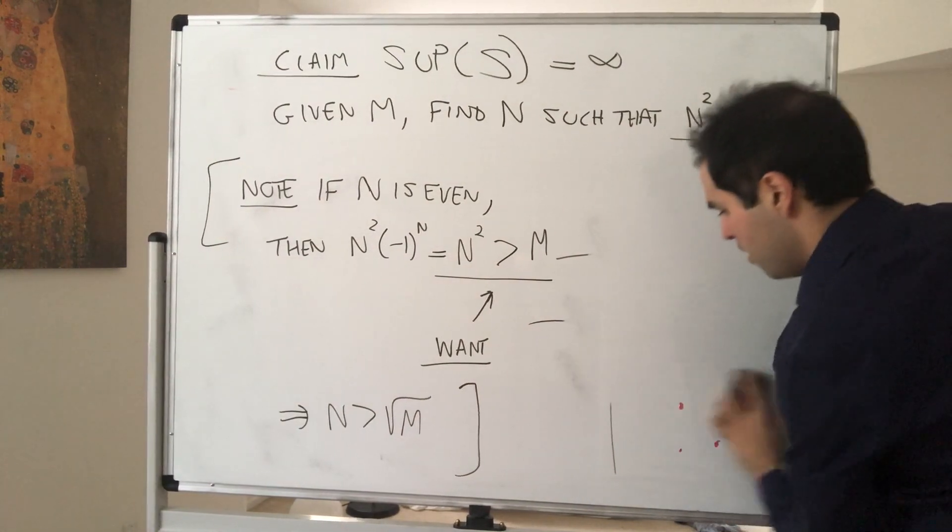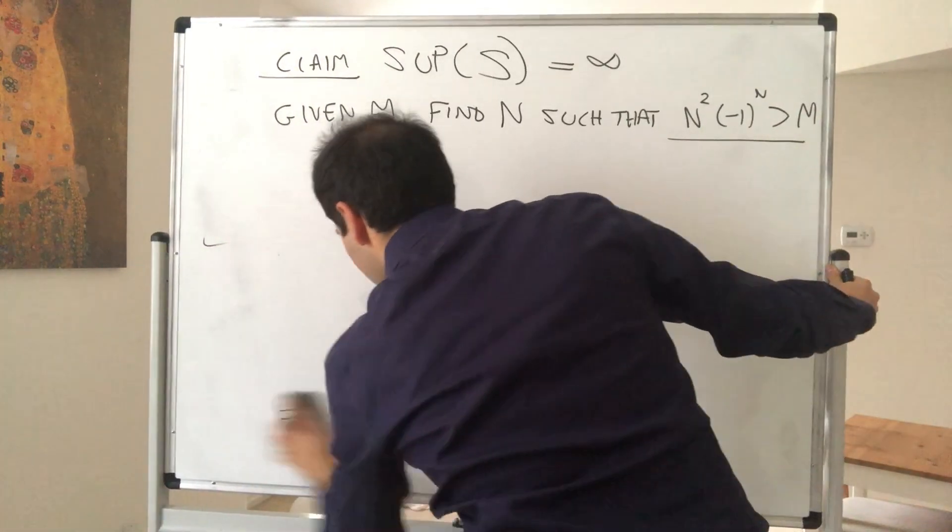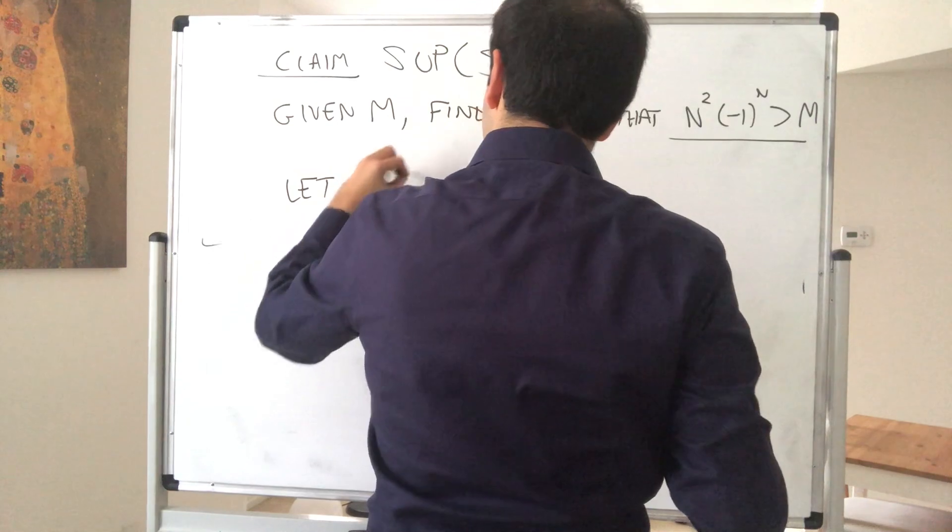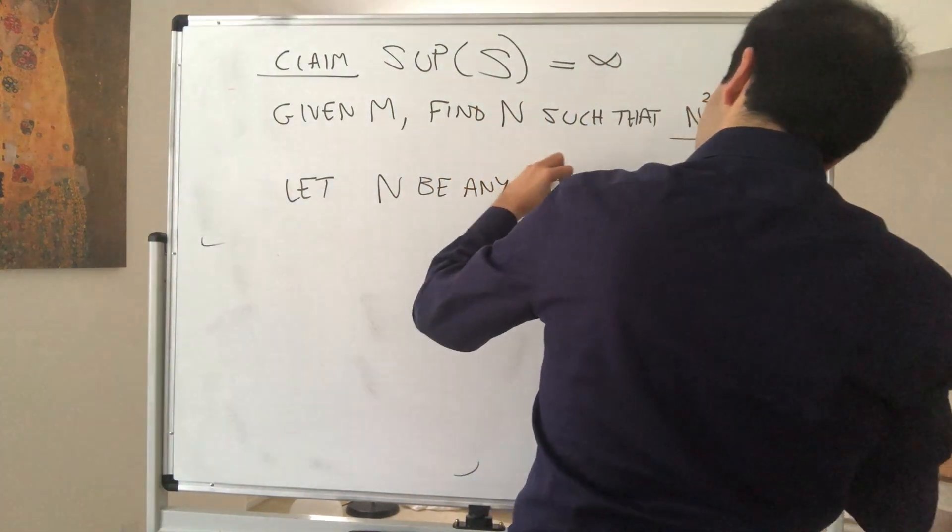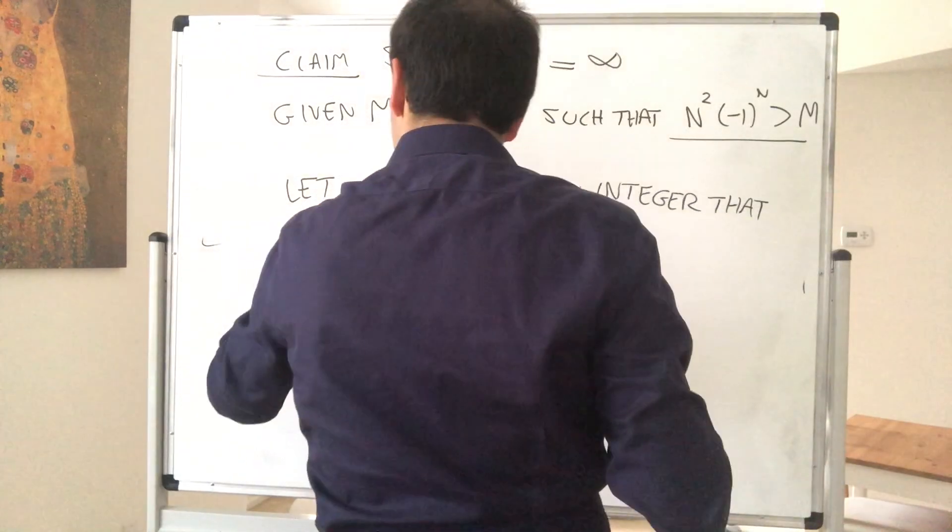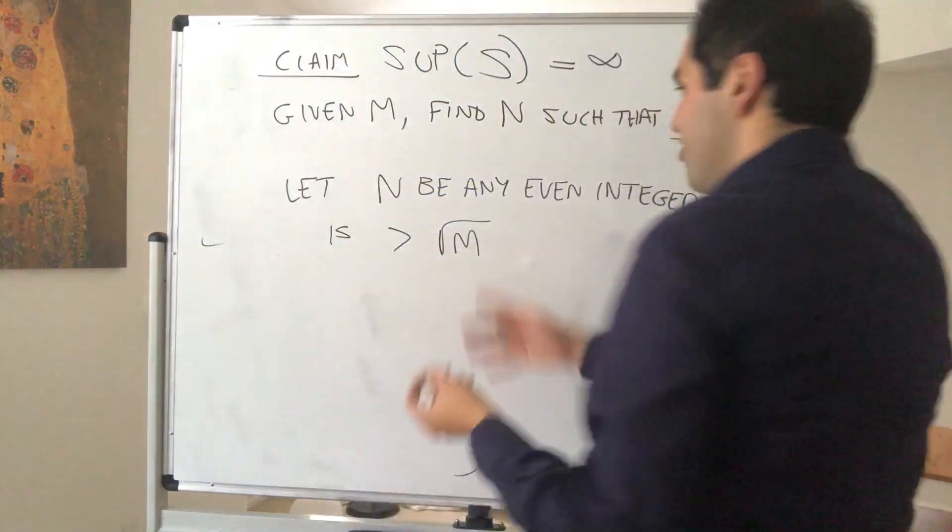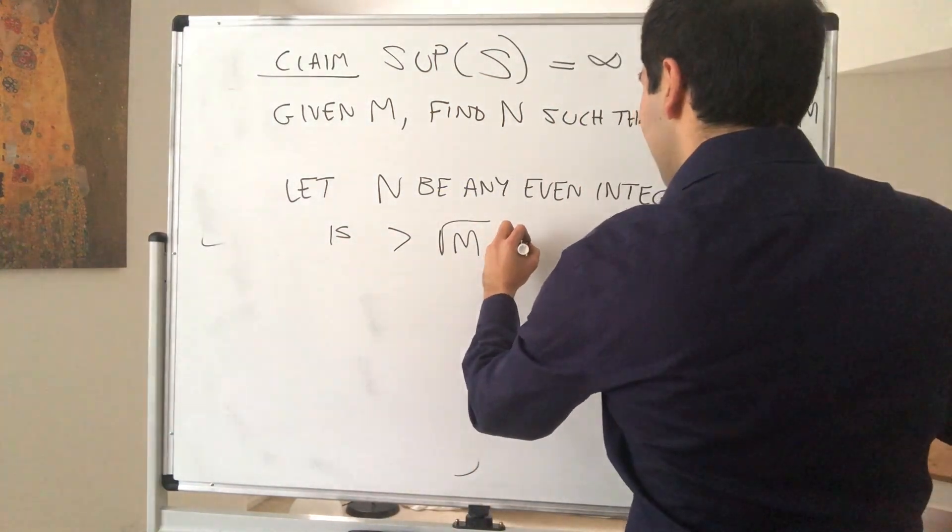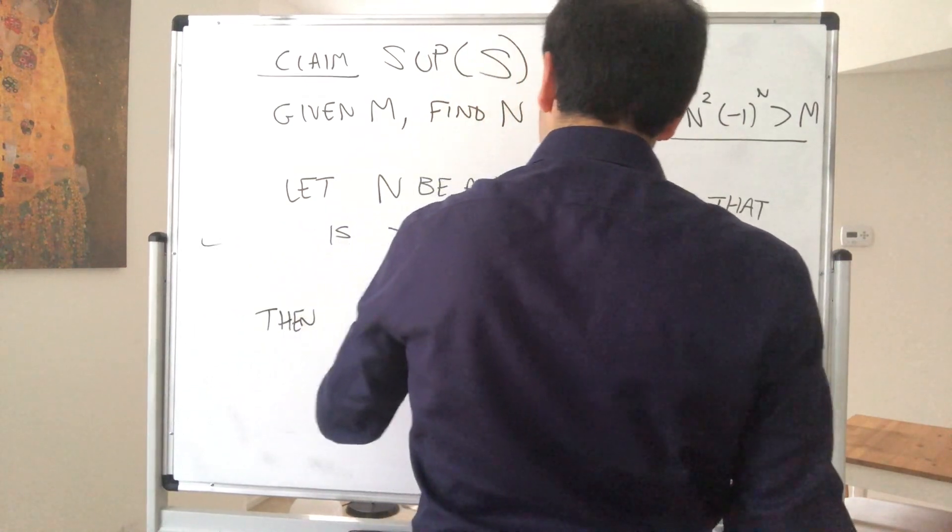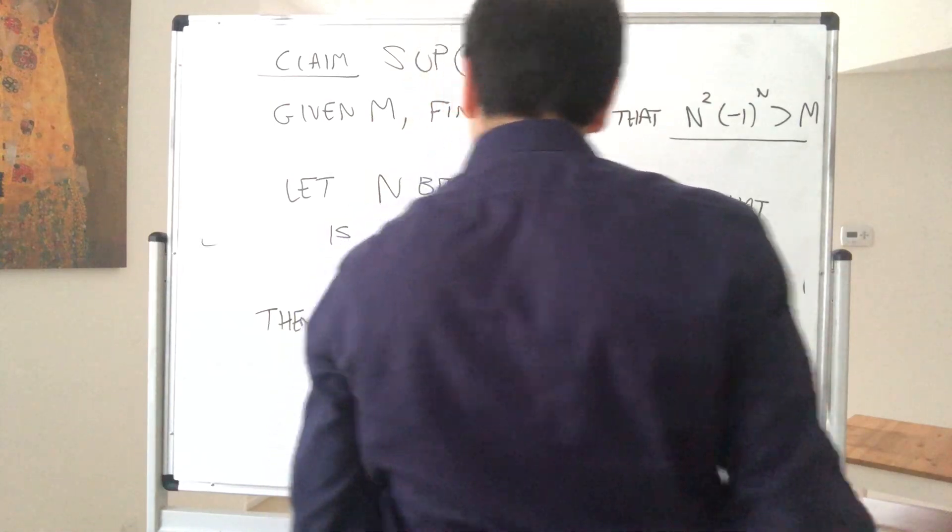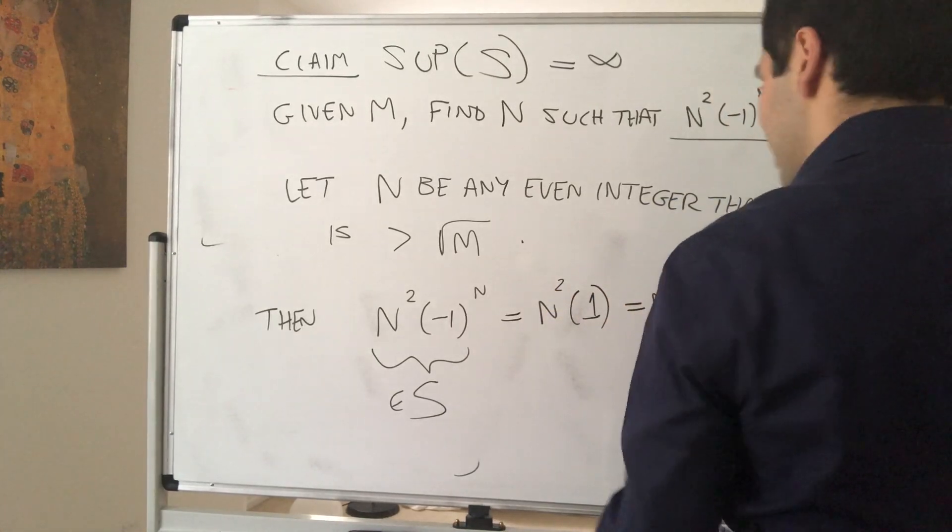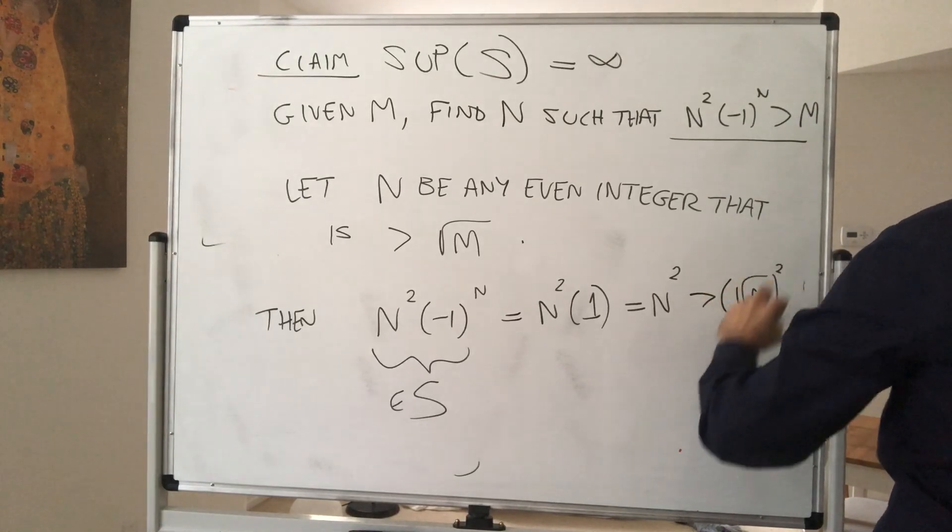So therefore, we have the following. So now, let n be any even integer that is greater than square root of m. By the way, this holds by the Archimedean property, if you'd like. Then what do we have? n squared times minus 1 to the n. Again, technically, that is in S. Becomes n squared times 1, because n is even. And that is n squared, which becomes greater than square root of m squared, which is m.